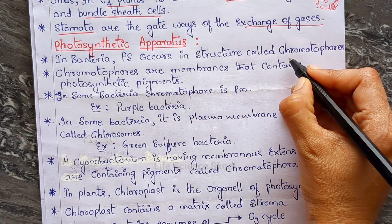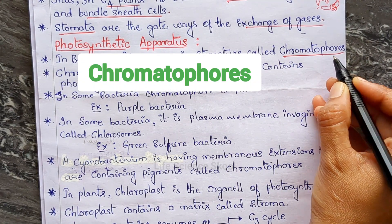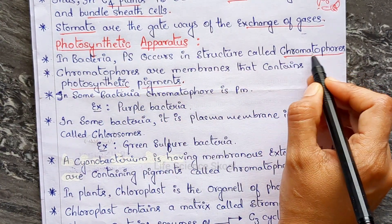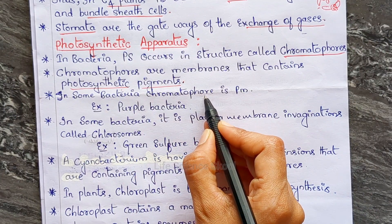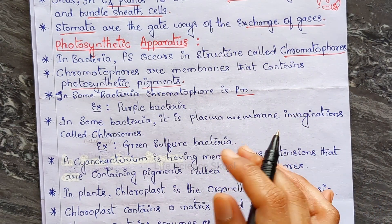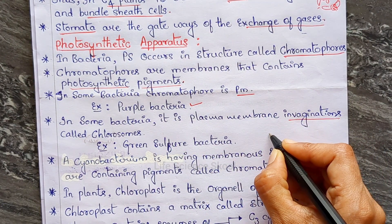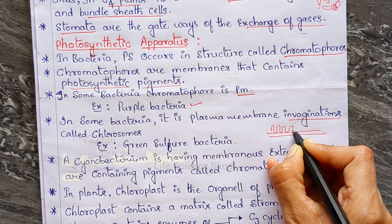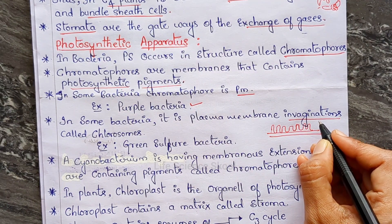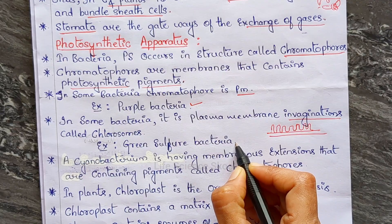Now the photosynthetic apparatus. In bacteria, photosynthesis occurs in structures called chromatophores. These chromatophores are membranes that contain the photosynthetic pigments. In some bacteria, the chromatophore is the plasma membrane itself — for example, purple sulfur bacteria. In other bacteria, plasma membrane invaginations called chlorosomes contain the chromatophores; an example is green sulfur bacteria.